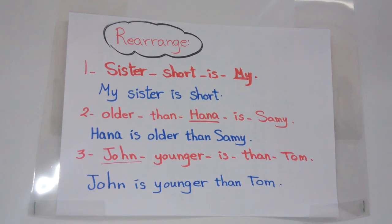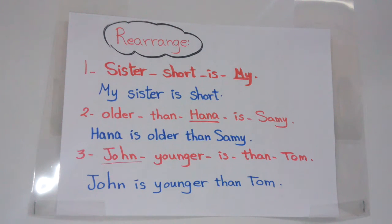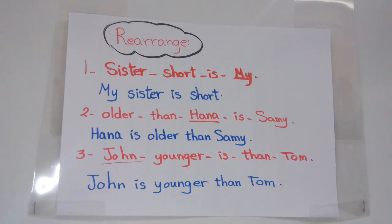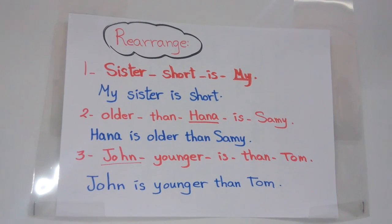Now you can look at the answers. Number one: My sister is short. Number two: Hana is older than Sammy — Hana أكبر من Sammy. Number three: John is younger than Tom — John أصغر من Tom. نلاحظ إن لو لقينا الصفة زي كلمة 'short' من غير ER، لأن أنا هنا مش بقارن بين اتنين — بقول بس My sister is short. أما لو هقارنها بأخويا، هقول: My sister is shorter than my brother.